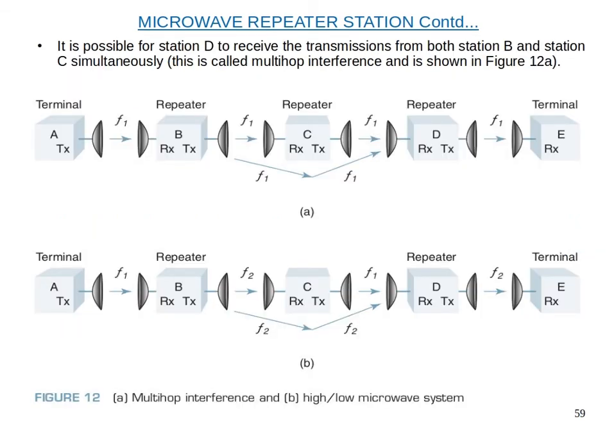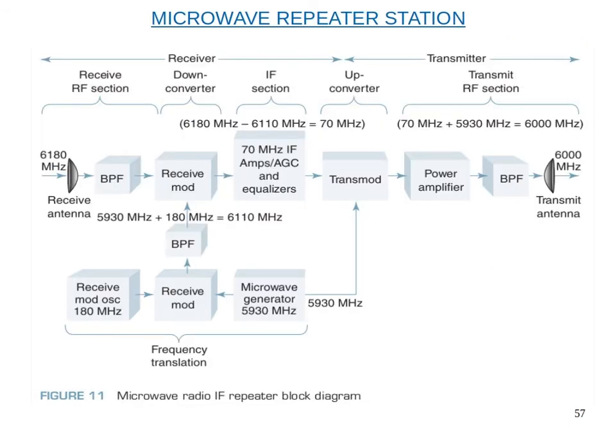A high-low microwave repeater station needs two microwave carrier supplies for the down and up converting process. Rather than use two microwave generators, a single generator with a shift oscillator, a shift modulator, and a bandpass filter can generate the two required signals. One output from the microwave generator is fed directly into the transmode, and another output is mixed with the shift oscillator signal in the shift modulator to produce a second microwave carrier frequency, offset from the first by the shift oscillator frequency.